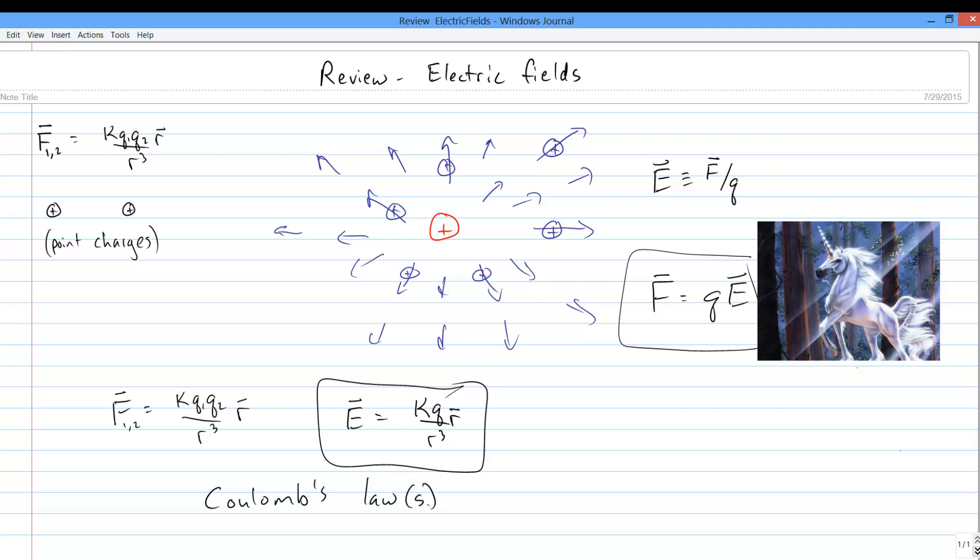We'll be spending plenty of time on fields in detail later on, but for now, here's a few highlights. Number 1. Fields obey superposition. That is, if you have two charges, each making a field at some location, the net field at that location is simply the sum of the individual fields made by each charge. Calculate the one, calculate the other, and add them up.